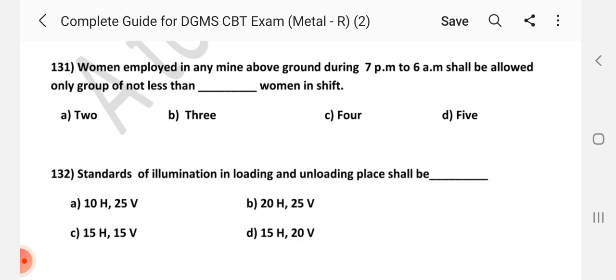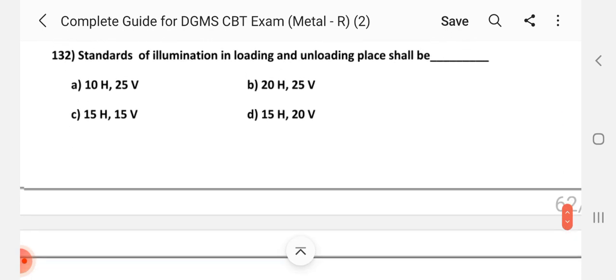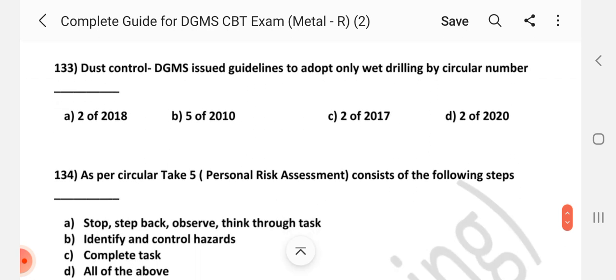Question number 131. Woman employed in any mine above ground during 7 p.m. to 6 a.m. shall be allowed only group of not less than dash women in shift. Answer is B, 3. Question number 132. Standards of illumination in loading and unloading place shall be dash. Answer is C, 15 horizontal comma 15 vertical. Question number 133. Dust control DMS issued guidelines to adopt only wet drilling by circular number is dash. Answer is C, 2 of 2017.